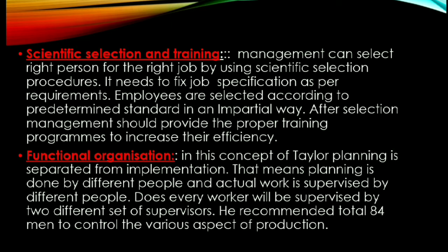The fourth technique is scientific selection and training. Management can select the right person for the right job by using scientific selection procedures. Job specifications are fixed as per requirements — for example, if particular skills are required, a skilled worker is found; if it is a professional job, a professional is selected. Employees are selected according to pre-determined standards in an impartial way, and after selection, management provides proper training programs to increase their efficiency.